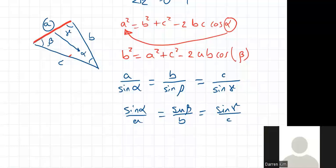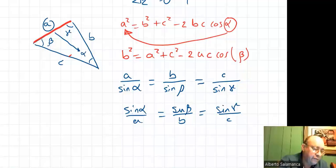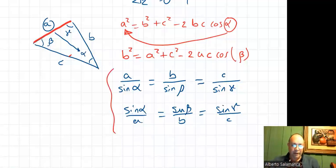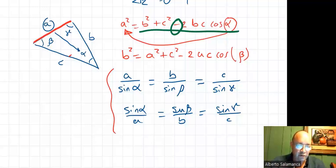A student asks: for the second equation with B squared, shouldn't it be two times A C, not AB? Of course — because you are trying to find B, so it's two A C. Thank you very much. I'm going to make several mistakes today so you guys speak up. Don't forget the minus sign in the cosine law — students forget it many times. Other than that, it's just putting the numbers in your calculator.